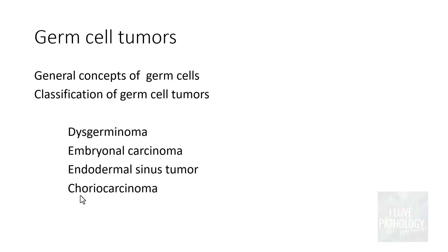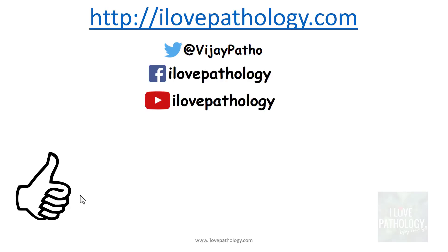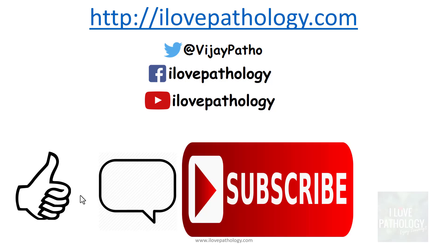So that's all for today's session. We talked about the general concepts of germ cells, looked into the classification of germ cell tumors, and then in detail the morphological features of Dysgerminoma, Embryonal Carcinoma, Endodermal Sinus Tumor, and Choriocarcinoma. In the next session we will look into the germ cell tumor that differentiates along embryonic structures and talk about everything about teratomas. If you liked this video, hit the like button, do comment, subscribe, and share if you find the content useful. Thank you.